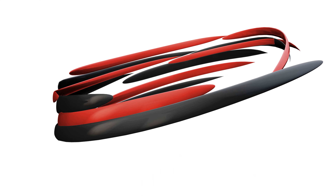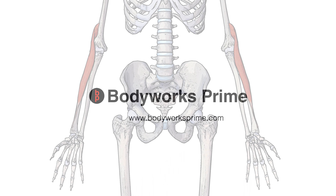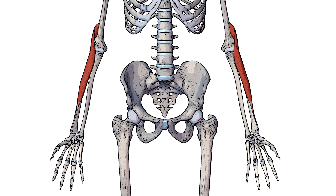Hi everyone, welcome to Bodyworks Prime. Today we're going to be going over the origin, insertion and action of the brachioradialis. Here you can see an anterior view of the brachioradialis. It's located on the lateral side of the forearm and it's also crossing over the elbow joint.